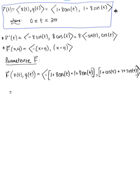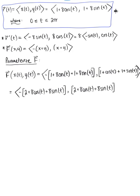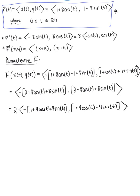Simplifying, the first component becomes -2 + 8cos(t) + 8sin(t) and the second becomes 2 + 8cos(t) + 8sin(t). Notice each component has a greatest common factor of 2, so we factor that out to get F(r(t)) = 2·(-1 + 4cos(t) + 4sin(t), 1 + 4cos(t) + 4sin(t)).